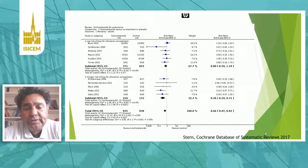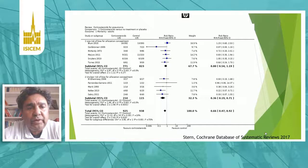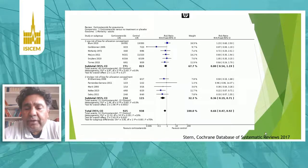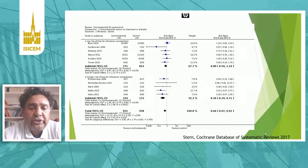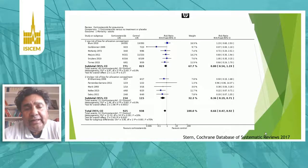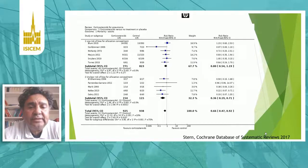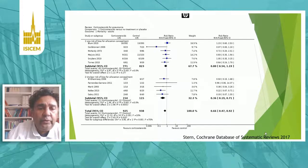As shown on the forest plot, with regard to all-cause mortality in the short term, this meta-analysis found a significant reduction in the risk of death associated with the use of corticosteroids, with a risk ratio of 0.66 and an upper limit of the 95% confidence interval of 0.92. However, there was some heterogeneity, with an I-squared of 75%. Looking at studies with low risk of bias, those with higher methodological quality showed no statistically significant reduction in the risk of death with the use of corticosteroids.